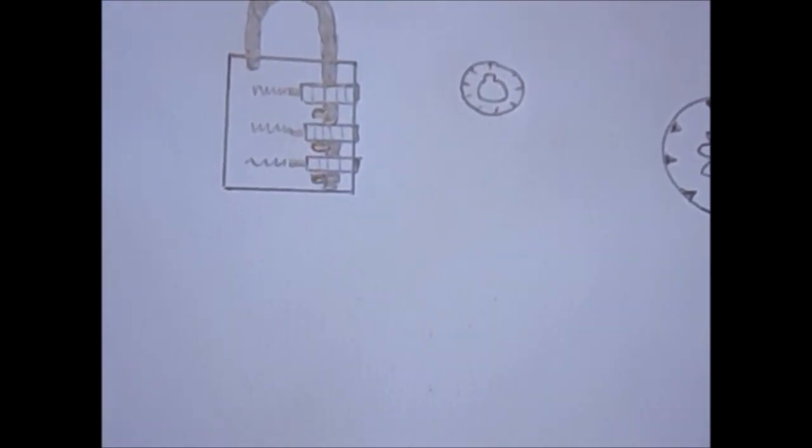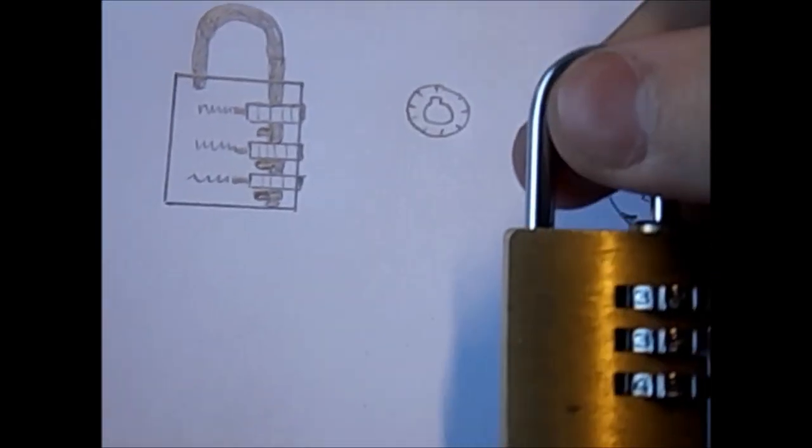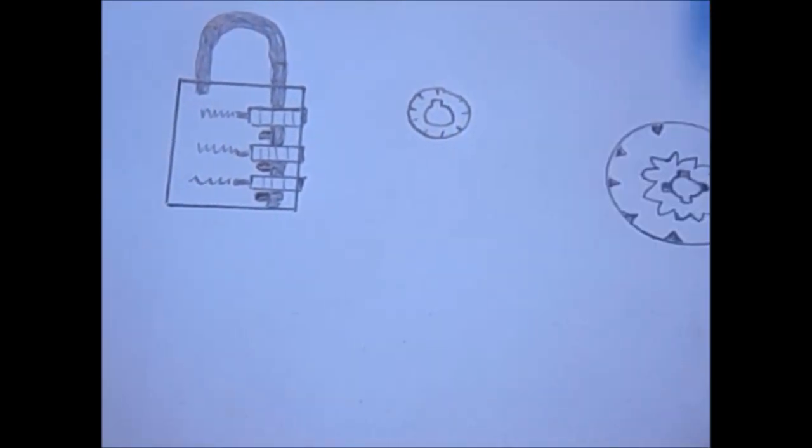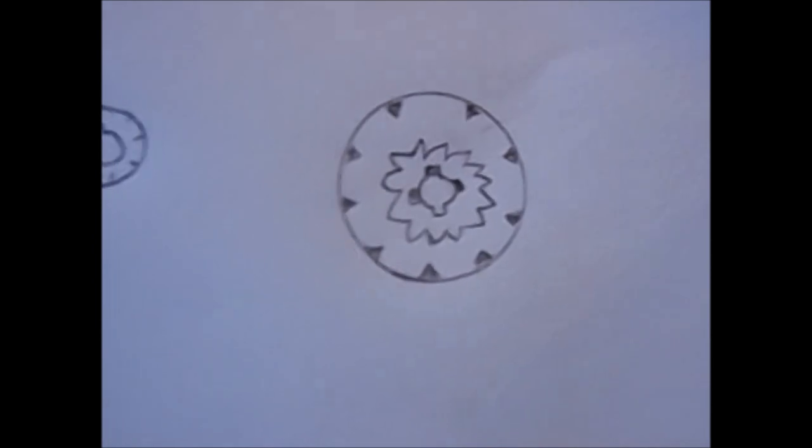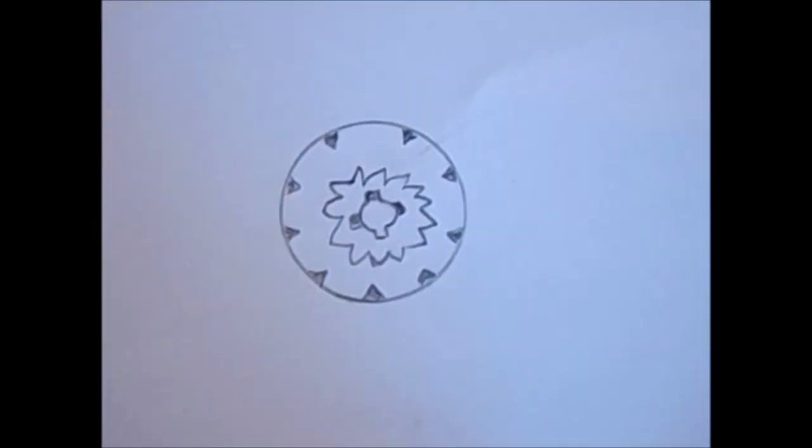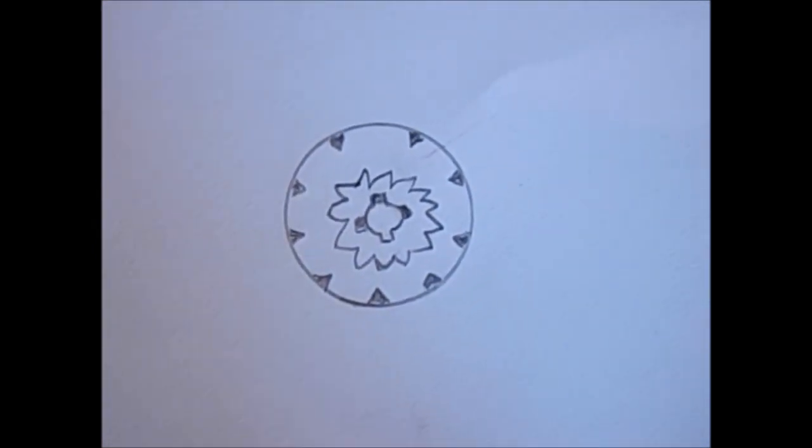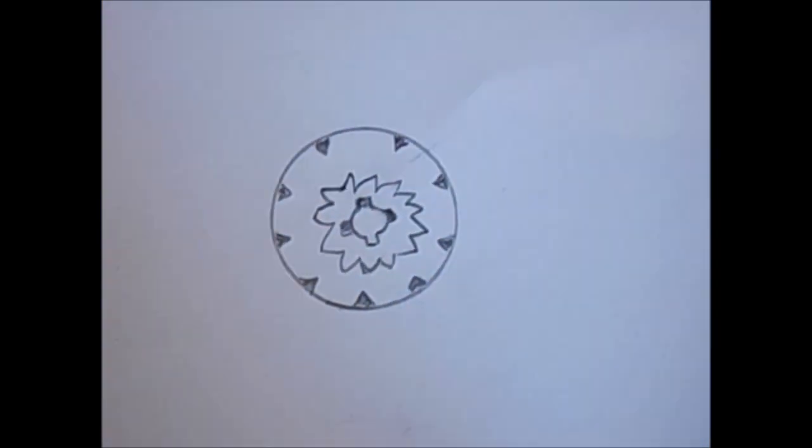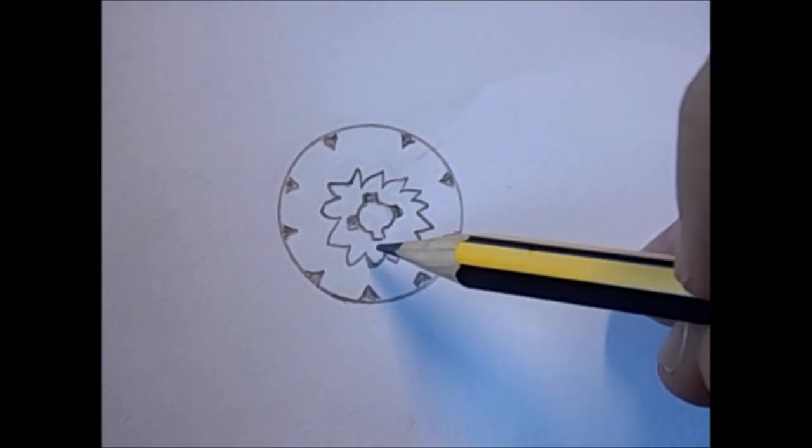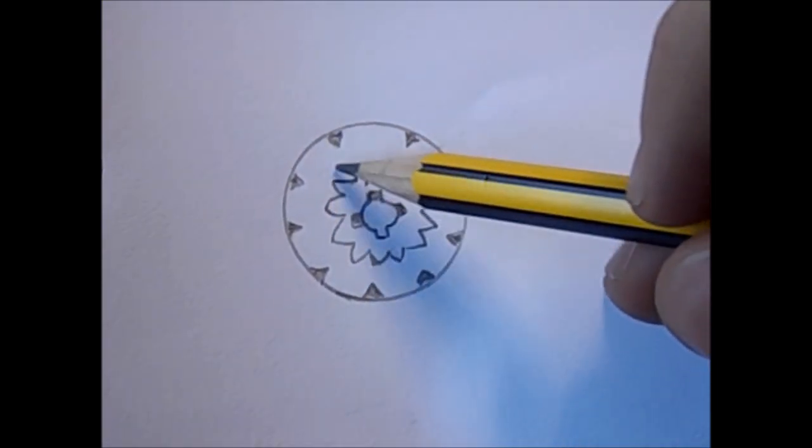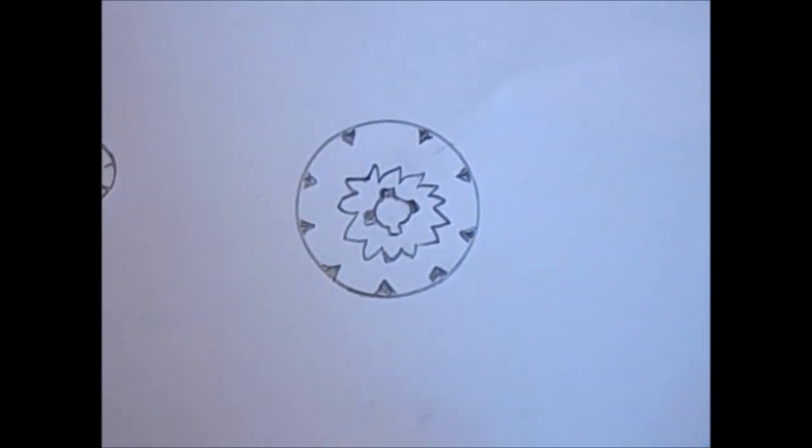However, our lock here is a little bit more complicated because we can change the combination. And so what we have here is a very crude drawing of a dial. And you have to imagine this almost as a kind of star shape or an octagon.